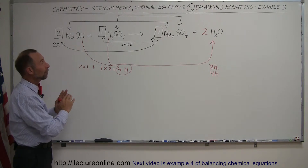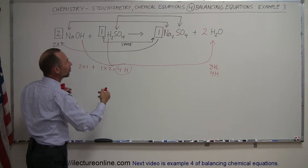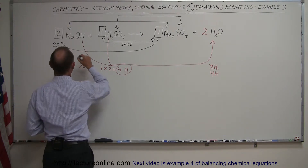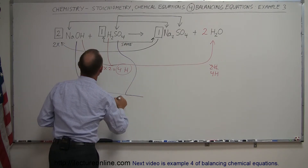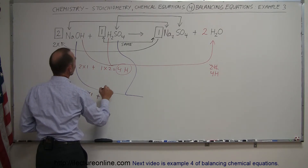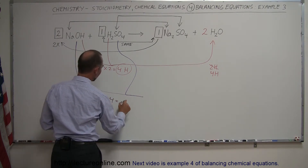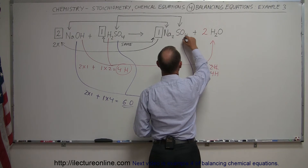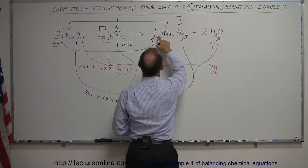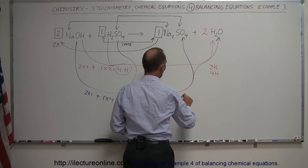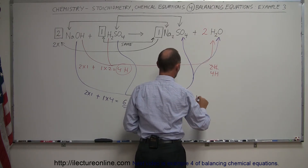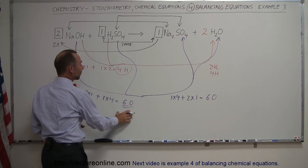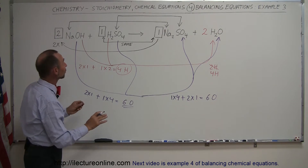When we balance oxygen, it may affect the other coefficients. On the left side: two times one from sodium hydroxide plus one times four from sulfuric acid gives six oxygens. On the right side: one times four from sodium sulfate plus two times one from water gives four plus two, which is six oxygens. We're lucky — oxygen was automatically balanced by the other coefficients. We now have a balanced equation.